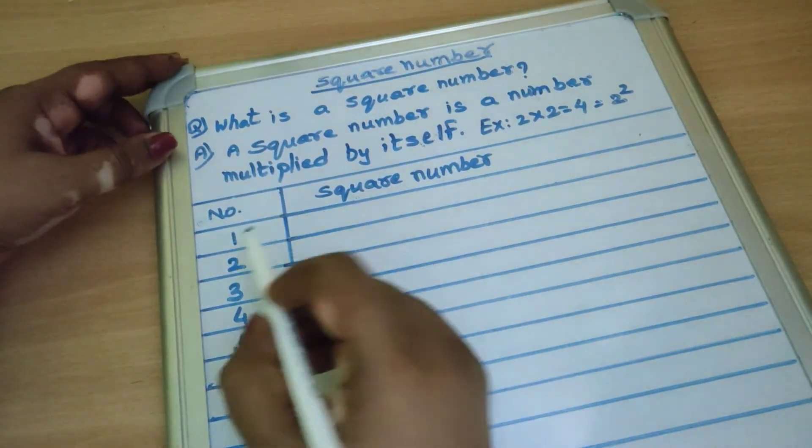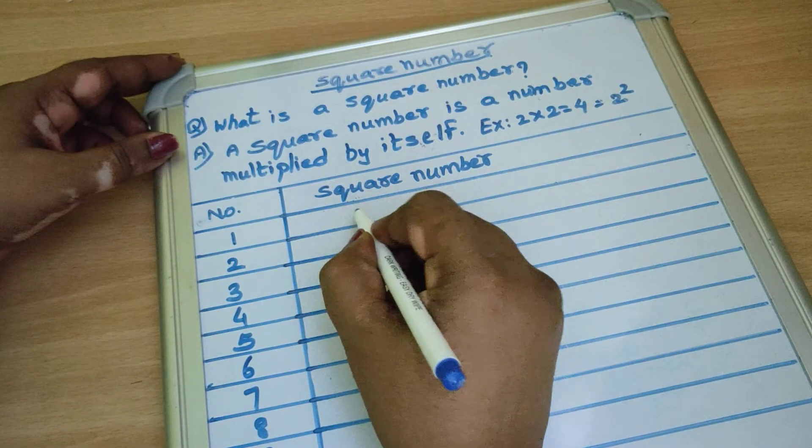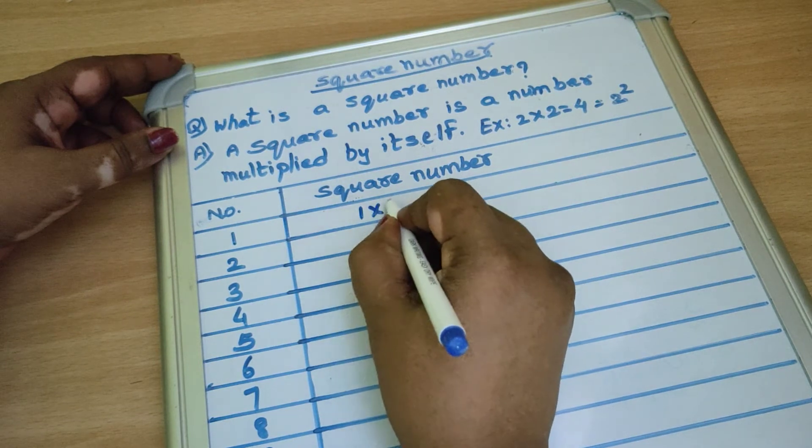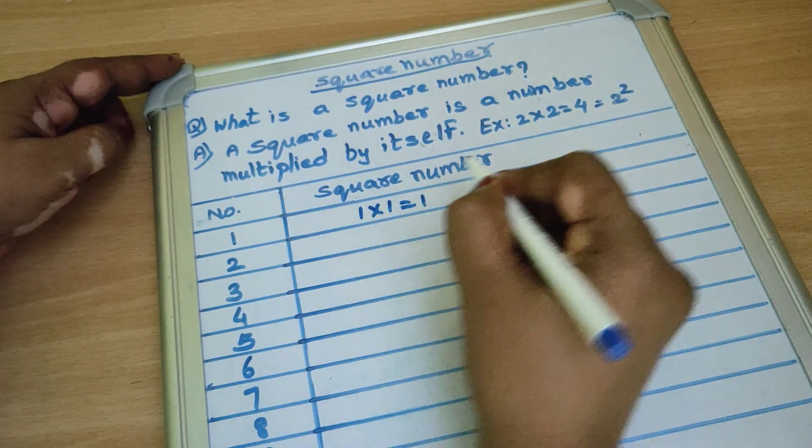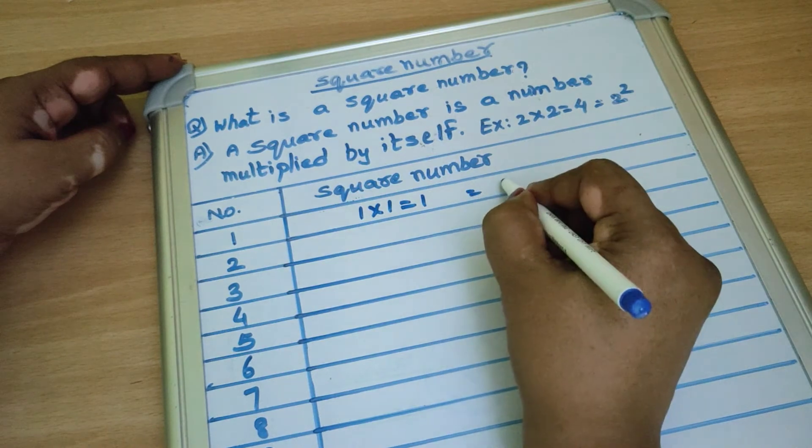Number 1. A square number is 1 multiplied by 1 equal to 1. And write as 1 square.